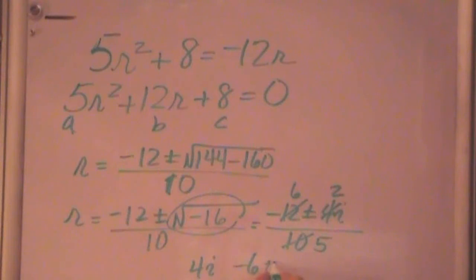So we have minus 6 plus or minus 2i, all over 5 for R. 2i, I left off the 2i.